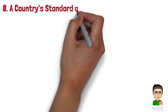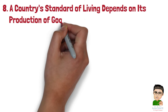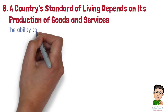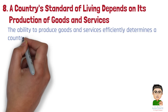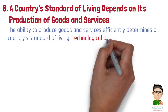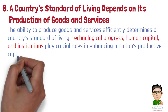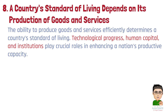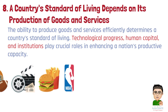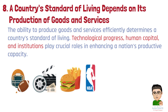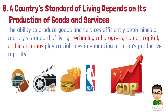Number 8: A country's standard of living depends on its production of goods and services. The ability to produce goods and services efficiently determines a country's standard of living. Example 1: The industrialization and technological advancements in countries like the United States have led to high productivity and a high standard of living. Example 2: The economic growth of countries like China and India, driven by manufacturing and services, has lifted millions out of poverty and improved living standards.